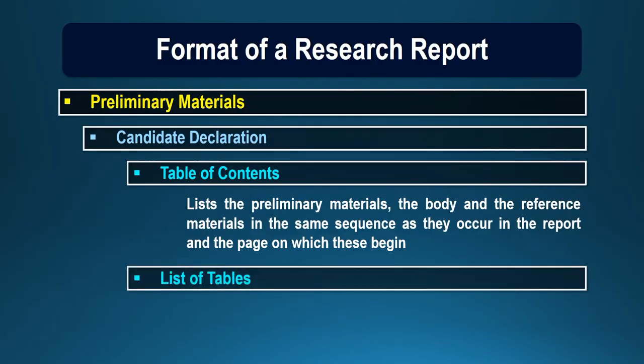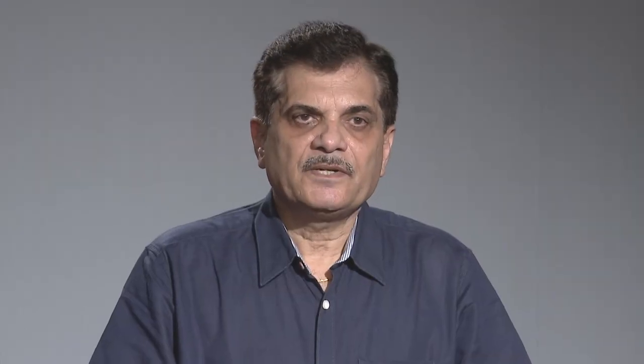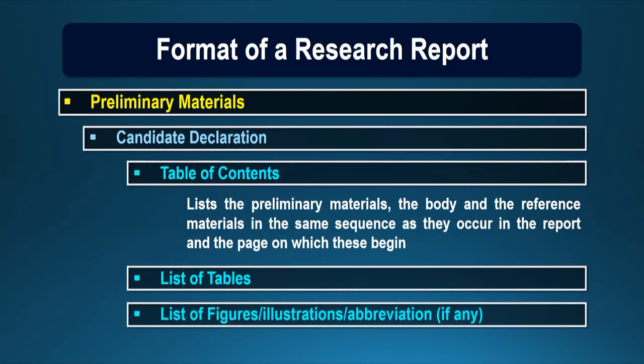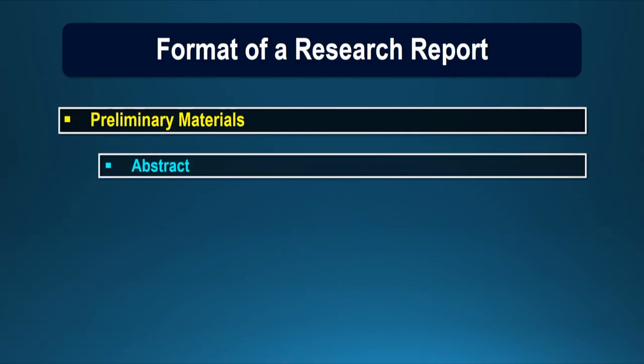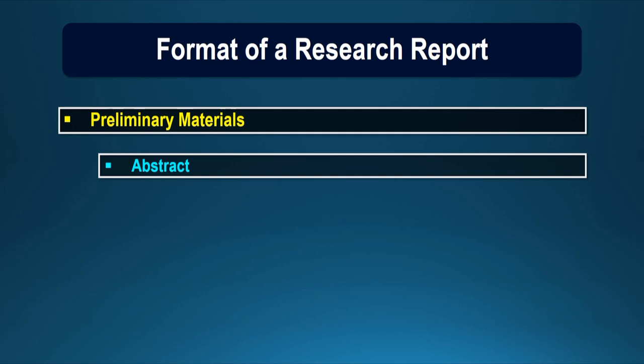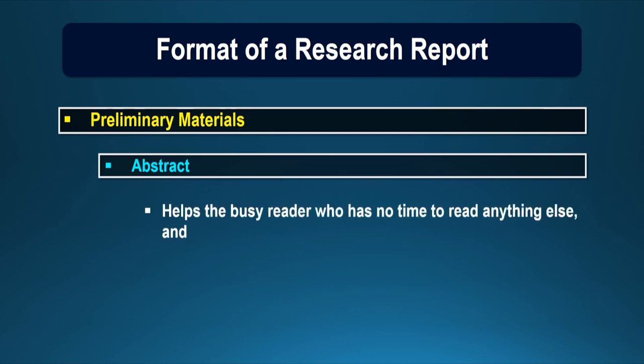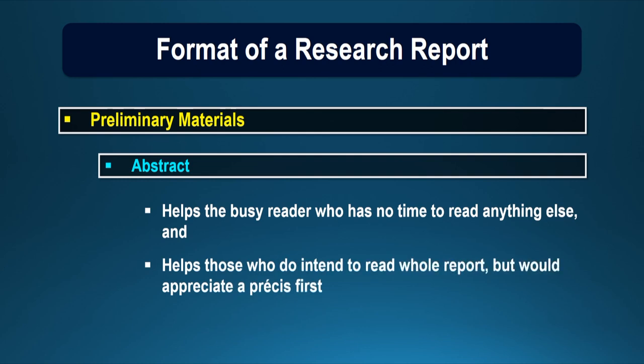The list of tables provides the tables contained in all the chapters, and also the list of figures, illustrations, and abbreviations, if any. We can also include an abstract under the preliminary material, because abstracts help the busy reader who has no time to read anything else, and it may help those who do intend to read the whole report but would appreciate a précis first.